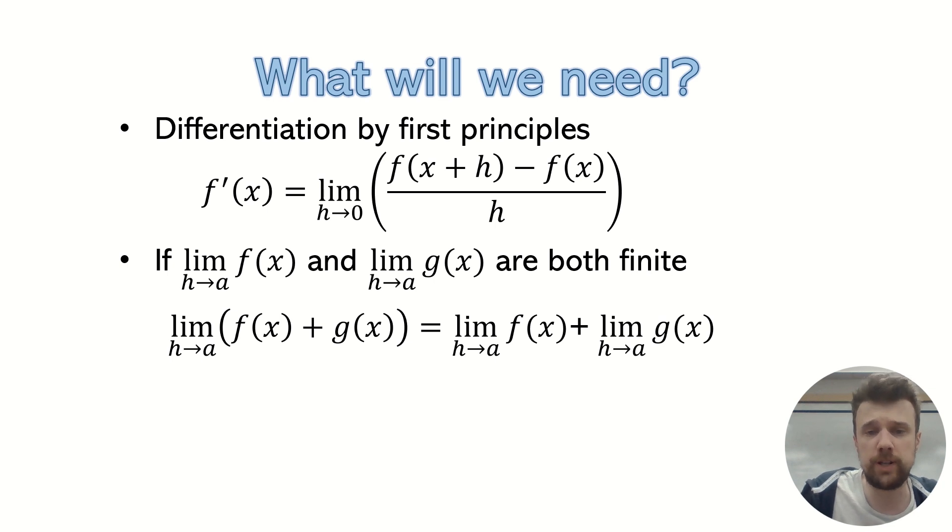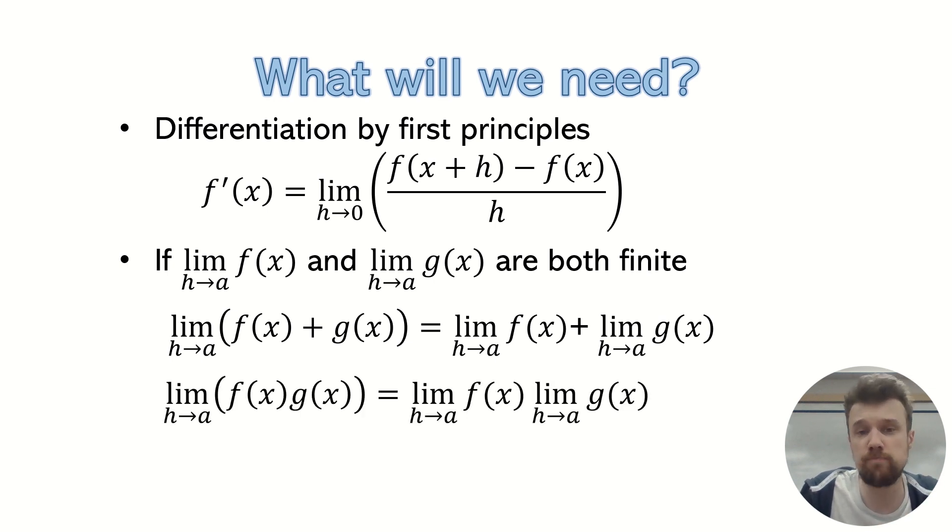And then the other property we need to use is if we've got two functions multiplied together, and then we're taking the limit of that, then that's the same as doing the limit of the individual functions, and then multiplying that together later, as long as we're dealing with finite limits only.